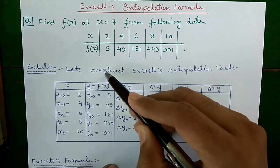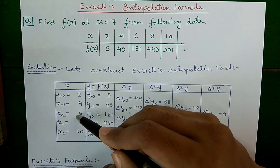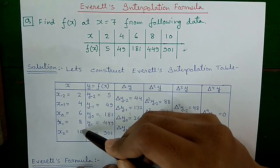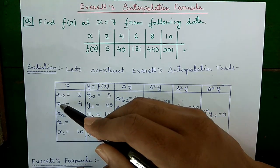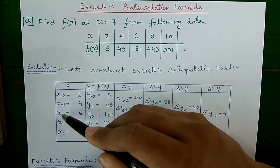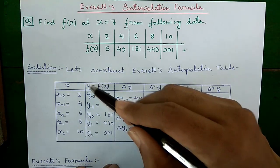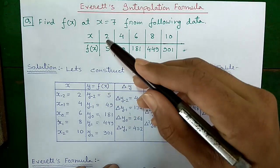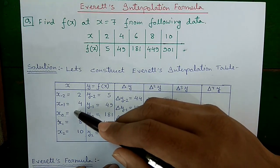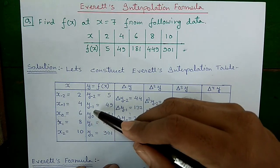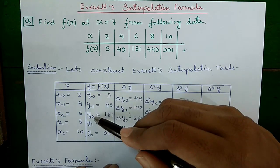Let's construct the Everett's interpolation table. In the first column, write down all x values from 2 to 10. The middle value of x will be x₀; values above x₀ will be x₋₁, x₋₂, and so on; values below x₀ will be x₁, x₂, and so on. In the f of x column, write down all f of x values starting from 5 to 901. The value corresponding to x₀ will be y₀; values above y₀ will be y₋₁, y₋₂, and so on; values below y₀ will be y₁, y₂, and so on.